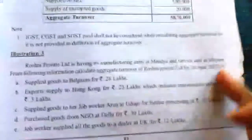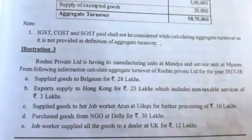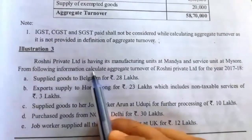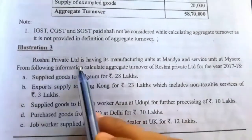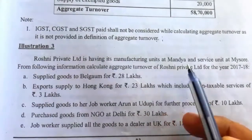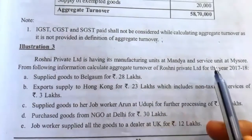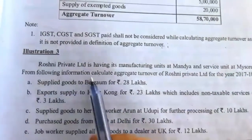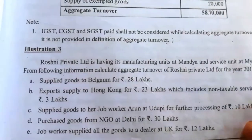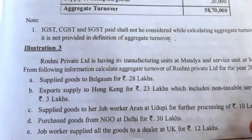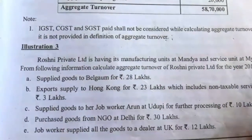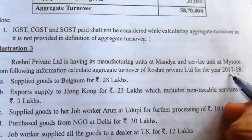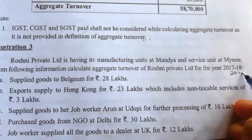Next, see illustration number 3. Roshni Private Limited is having its manufacturing units at Mandia and service unit at Mysore. From the following information, calculate the aggregate turnover of Roshni Private Limited for the year 2020-21.